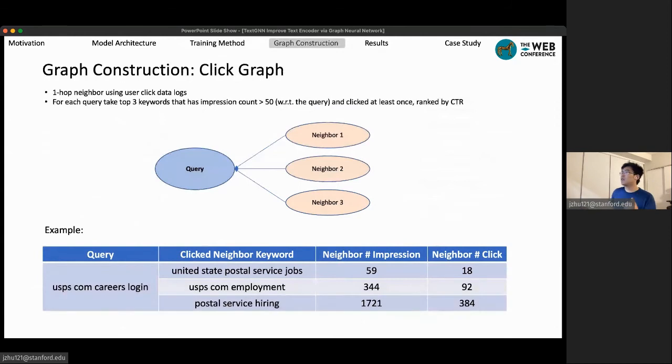Now, having the structure and the training method in mind, you might be wondering how do we actually find the neighbors in the graph. So we construct the neighbor graph based on the historical click log information. For each query or keyword, we pick the top three neighbors based on the historical click-through rates.